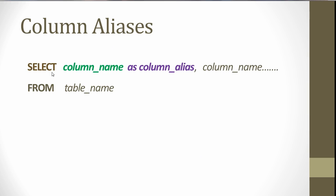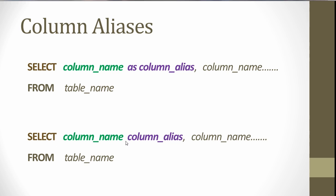Let's look at the column alias syntax. It is: SELECT column_name AS new_column_name. You can provide aliases for as many columns as you want, then FROM table_name. The WHERE and ORDER BY are optional so I didn't include them here. Another way is to just say SELECT column_name space column_alias. Some systems do not work without the AS keyword, but some do without it, so it depends on where you are running your queries.